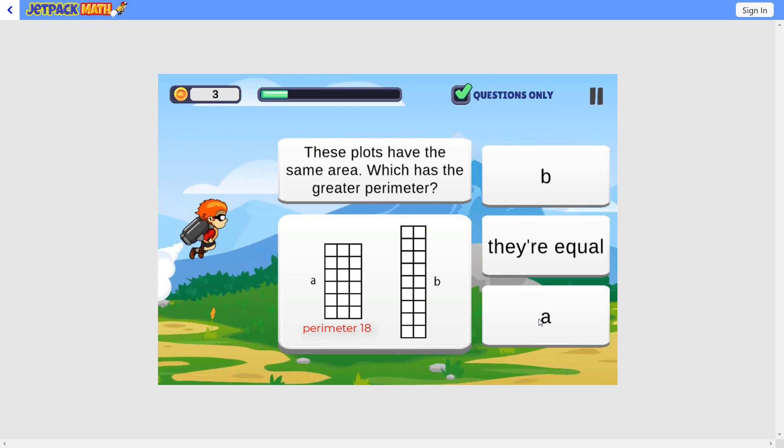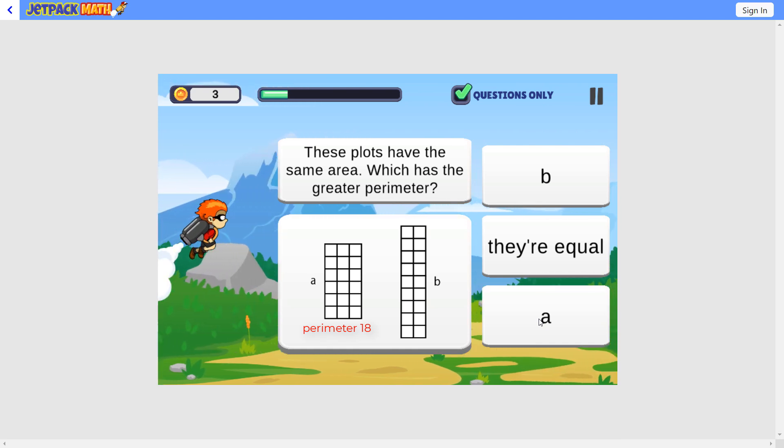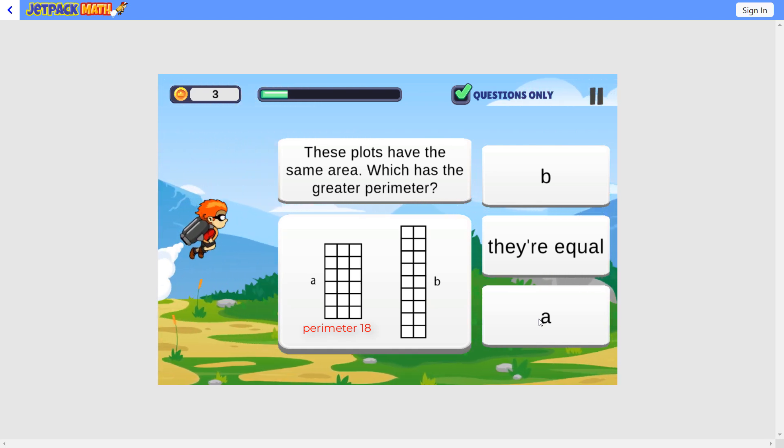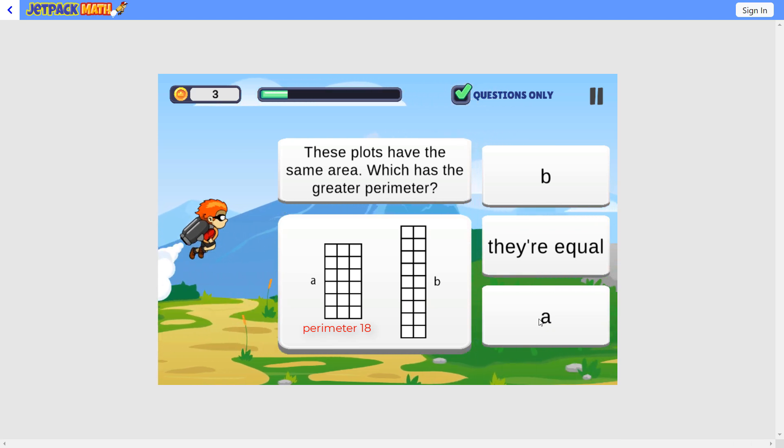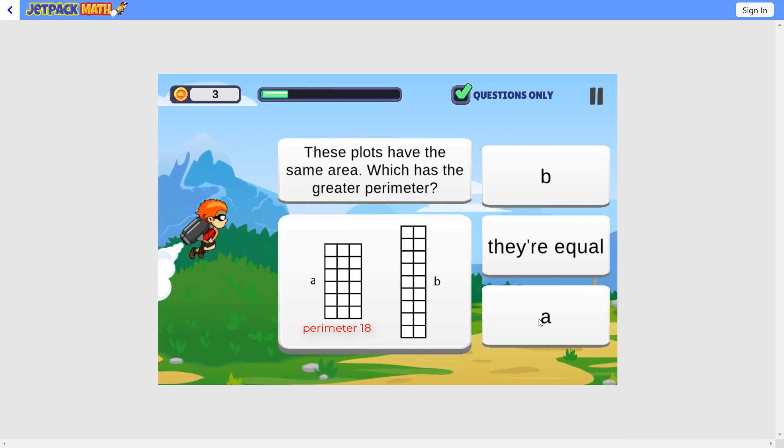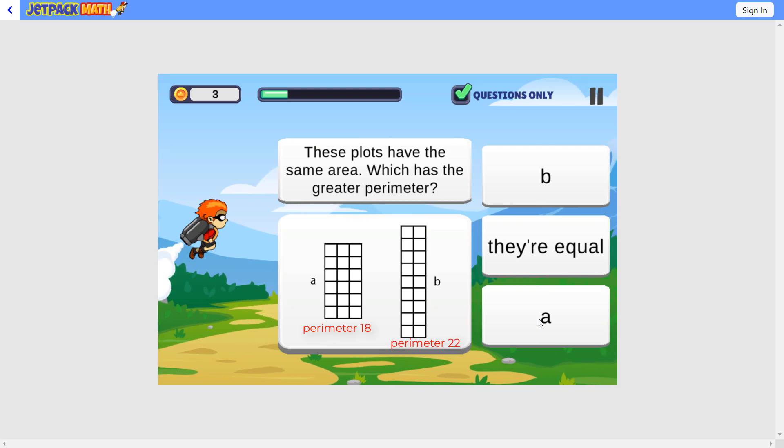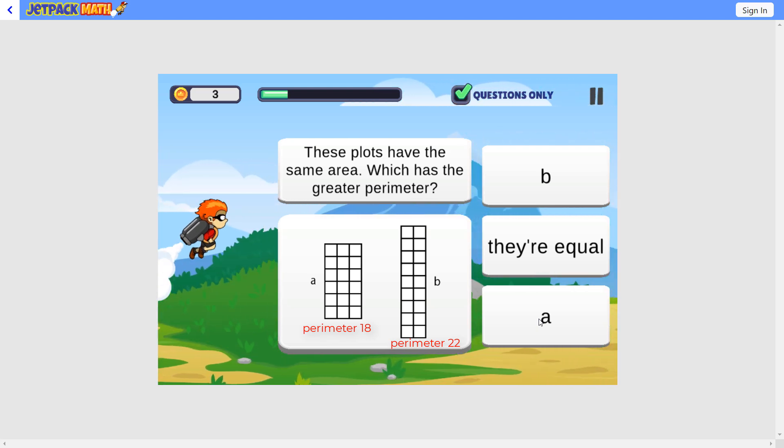If we look at B, we have 1, 2, 3, 4, 5, 6, 7, 8, 9. 9 plus 2 is 11. And we get a perimeter of 22. 11 times 2 is 22. So B has the greater perimeter.